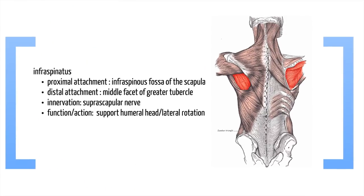Moving on to infraspinatus — infra meaning below the spine of the scapula. Its proximal attachment is the infraspinous fossa of the scapula and it inserts into the middle facet of the greater tubercle of the humerus. It's innervated by the suprascapular nerve again. Its main function, as with all the rotator cuff muscles, is to support the humeral head, and also lateral rotation.